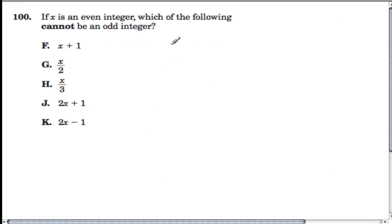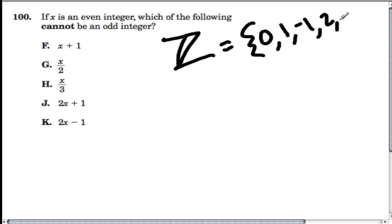The last question on this test was, if X is an even integer? Integers, this cool symbol right here, are zero, one, all the whole numbers and their opposites. Which of these cannot be an odd integer?